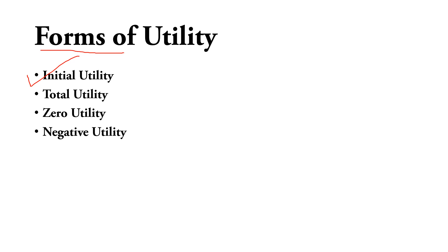The second form is total utility. Suppose you eat five chapatis total — the combined satisfaction you get from eating all five together, the utility you obtain from all of them together, is called total utility.